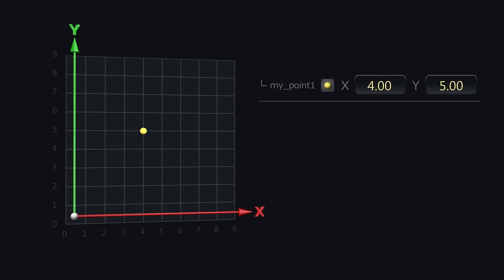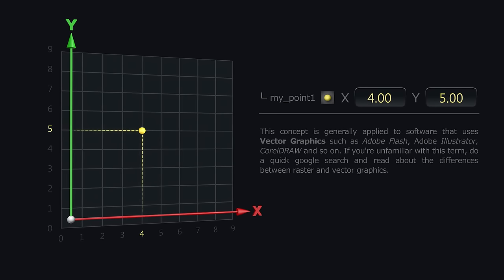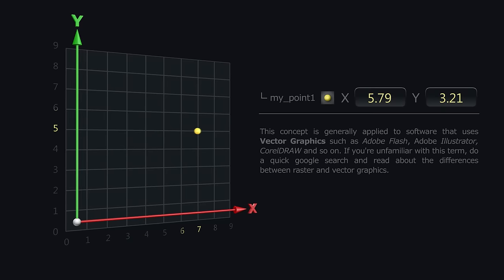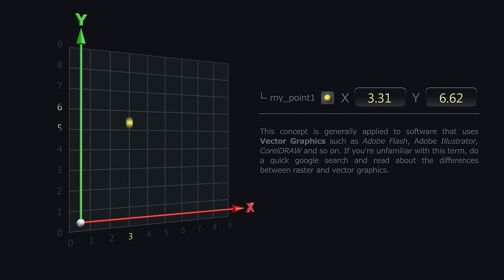Any point within this space will have two values. This one is X4 and Y5. If we change these values, we can move the point anywhere we want inside the 2D space.